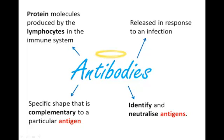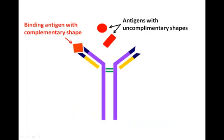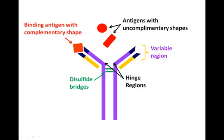What about the structure of antibodies? The polypeptide chains of an antibody are held together by disulfide bridges. They have a hinge region which allows flexibility when the antibody binds to the antigen. A variable region has a specific shape that is complementary to a particular antigen — the variable regions differ between antibodies. A constant region enables the body to recognise the antibody as self; the constant region is the same in all antibodies.